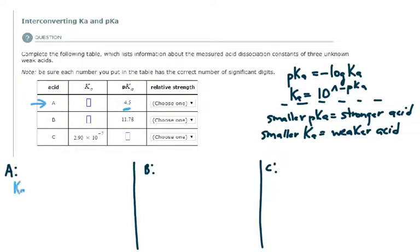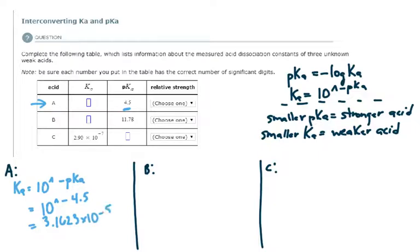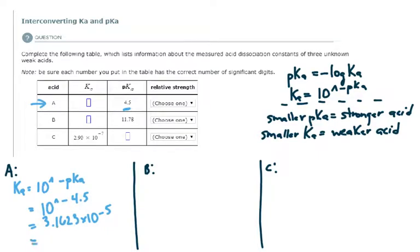The Ka is equal to 10 to the negative pKa. So the Ka is equal to 10 to the negative 4.5, which gives a value of 3.1623 times 10 to the minus 5. Now I need to determine how many significant digits I need. Looking at the pKa, there is one decimal place, so my Ka value should be rounded to one significant digit. My final answer would be 3. times 10 to the minus 5.